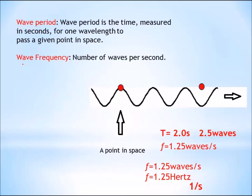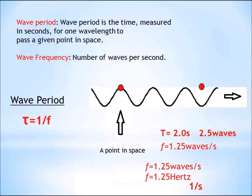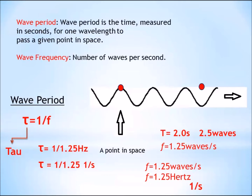We know the frequency of this wave is 1.25 Hertz — we calculated that just a minute ago. Let's go ahead and find the wave period. The period of the wave is the inverse of the frequency. Remember, that little symbol that looks like a T is the Greek letter tau — it stands for the period of the wave. Tau, the period of the wave, is equal to 1 divided by 1.25 Hertz — the inverse of the frequency of this particular wave. The period of this wave is equal to 1 divided by 1.25, and look at this unit: it is 1 over s.